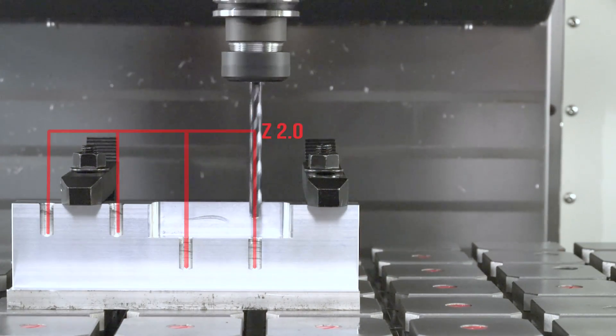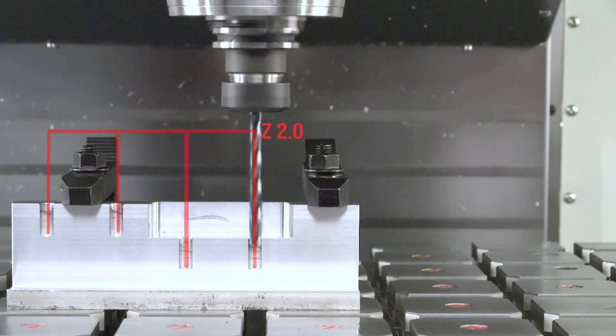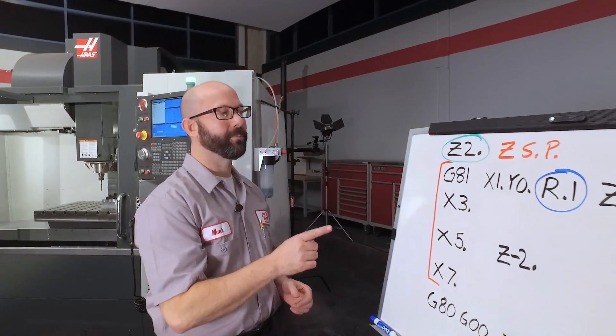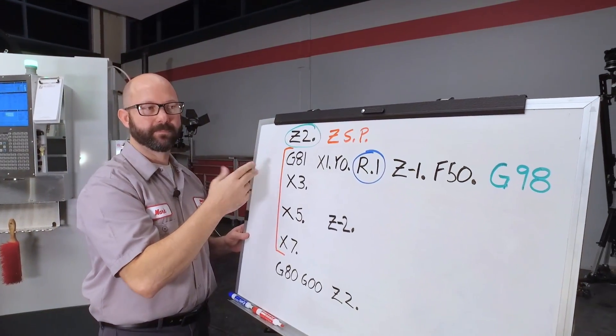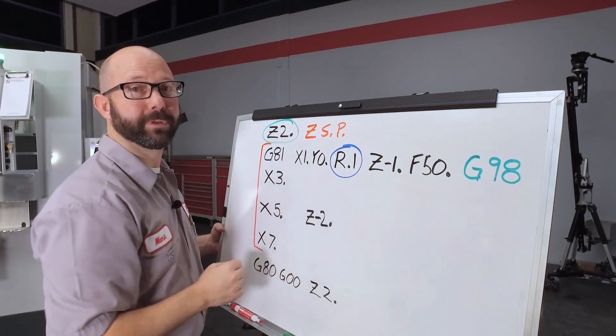Well, let's get this program ready for production and tighten up those clearance planes. Now, we've made some changes to our whiteboard. We changed our Z 0.5 to Z 2 inch, and we also wrote in that implicit G98.